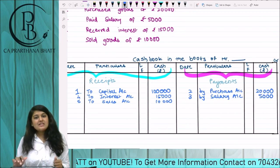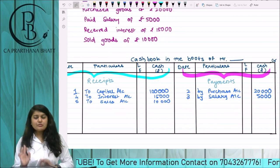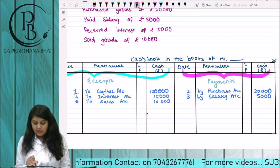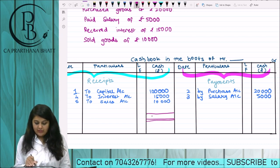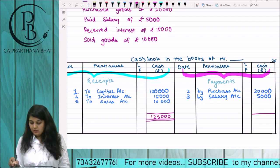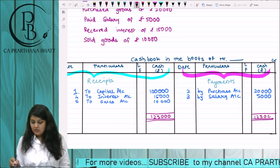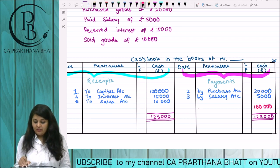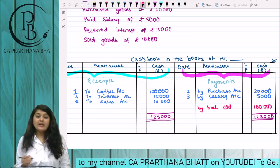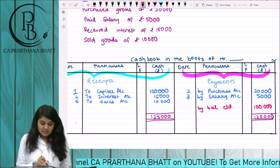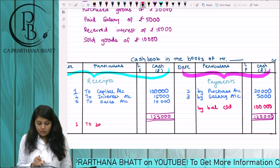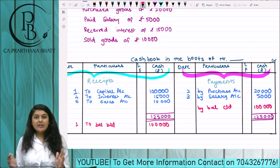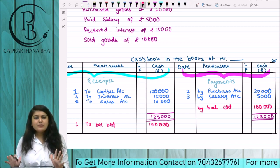Now what about balancing? We balance it the same way we used to do in the ledgers. The total on the debit side is 1,25,000. So on the last date, by balance carried down — and on the next month's first date, to balance brought down — same way as we do for ledgers. This is how we prepare a simple single-columnar cash book.